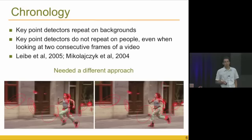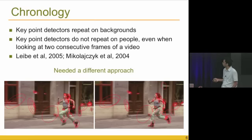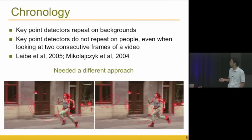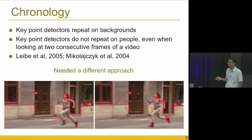Starting around 2001–2003, keypoint-based approaches started picking up. A keypoint is the most characteristic element of an image — for example, corners. This is used in algorithms like Google Goggles for image matching. But when applied to object detection for people, keypoints don't reliably repeat from one frame to the next — there are no keypoints on the arm, for instance — because human articulation changes their repeatability. This approach worked, but didn't improve the state of the art by a large margin.